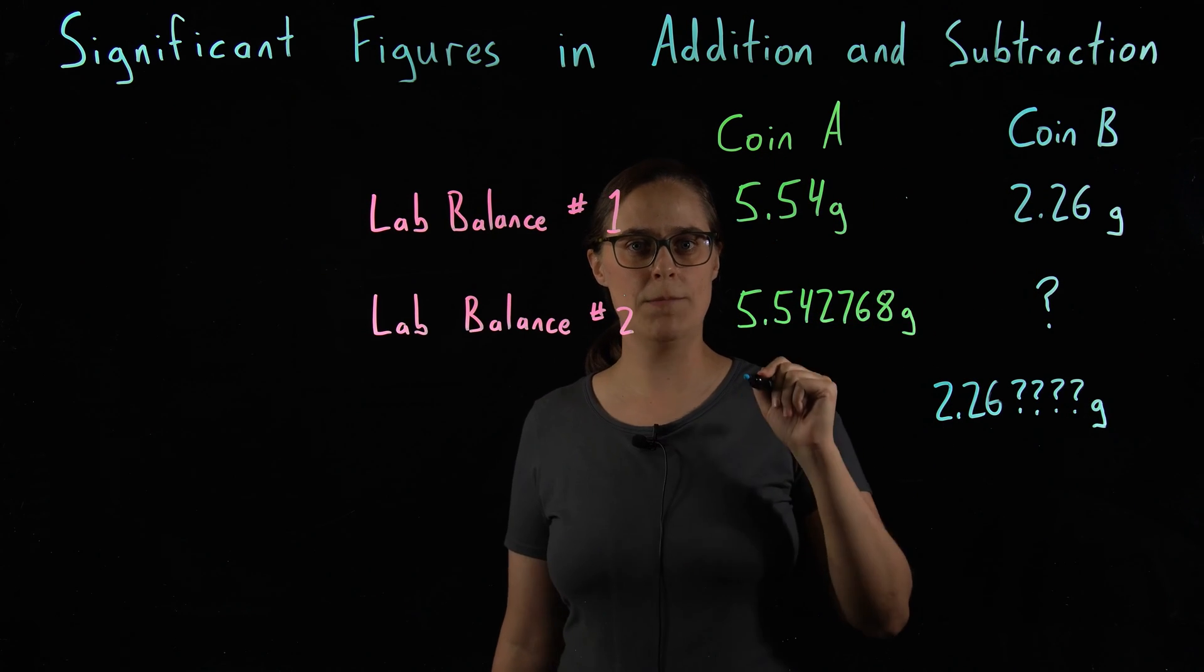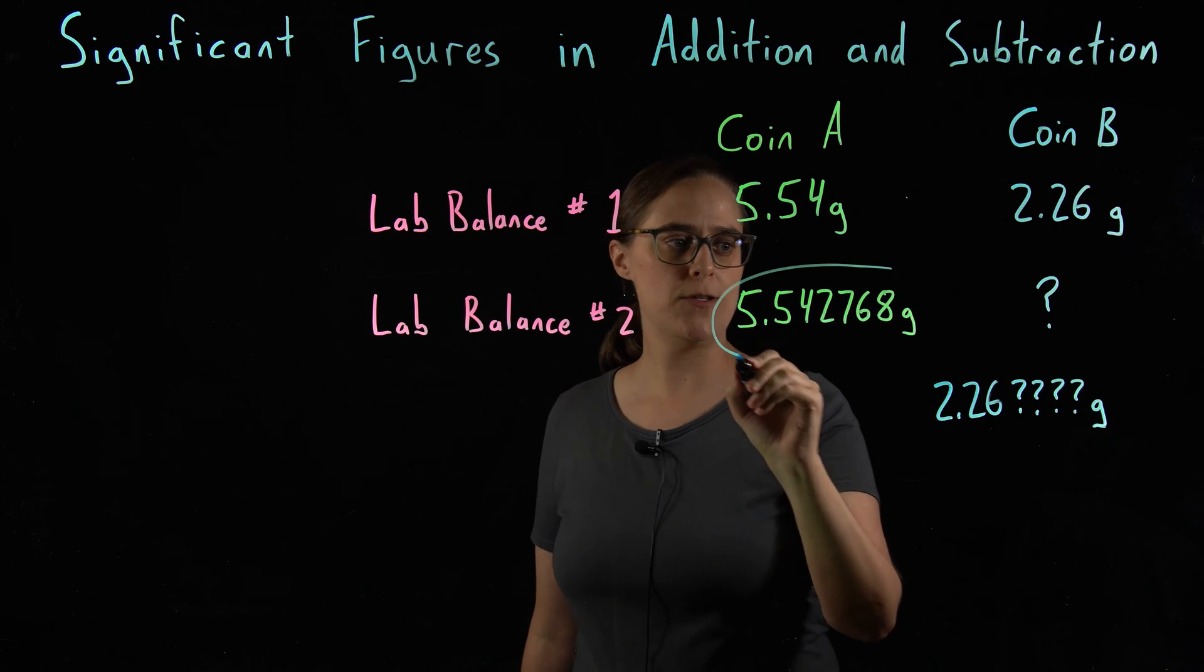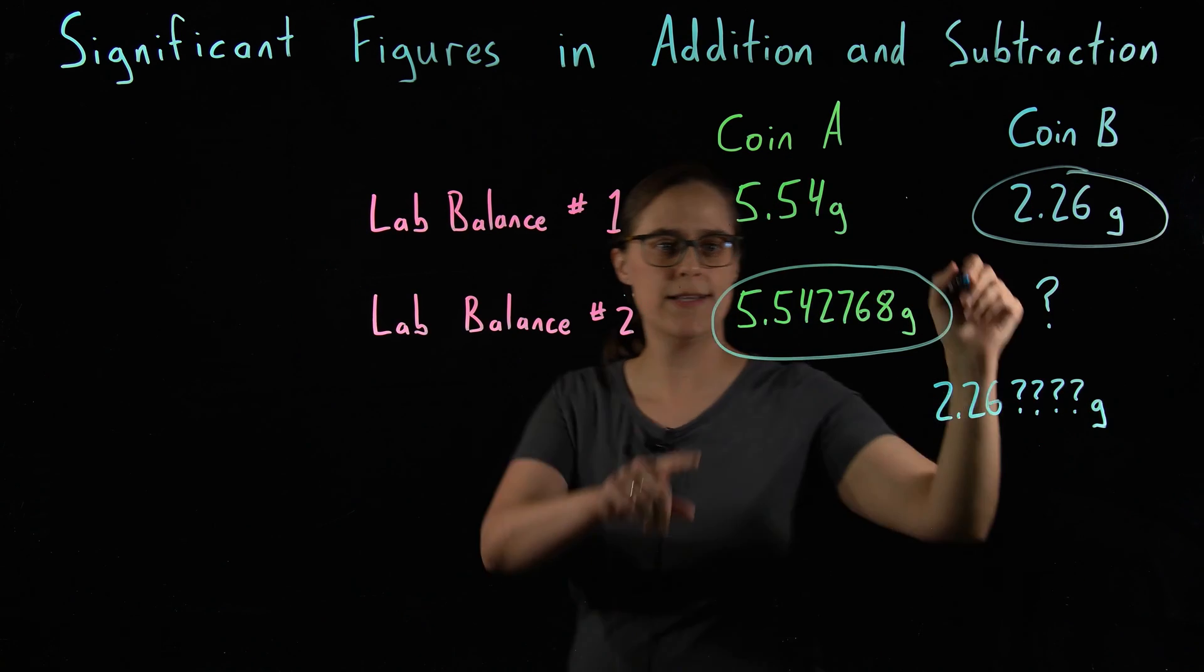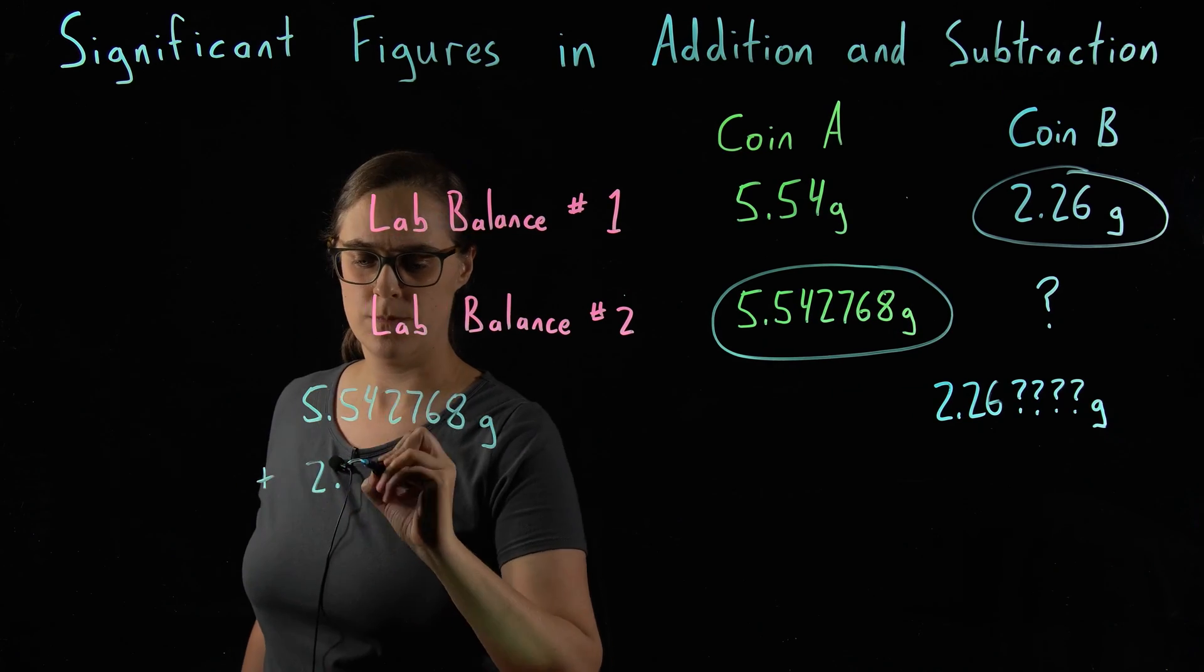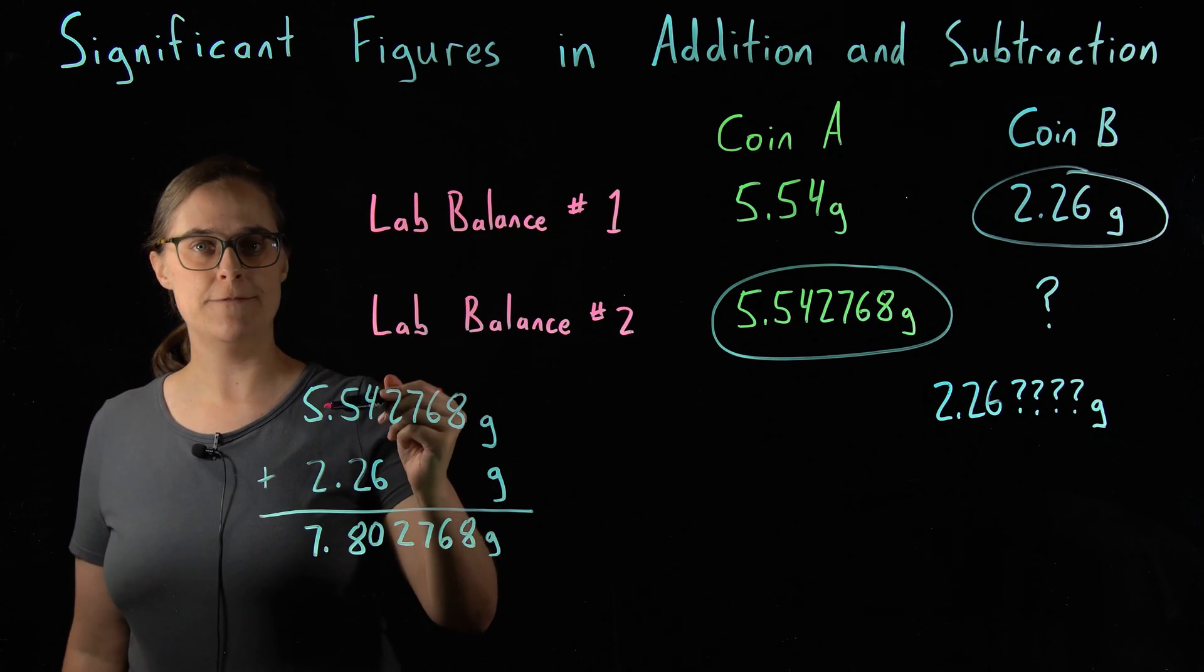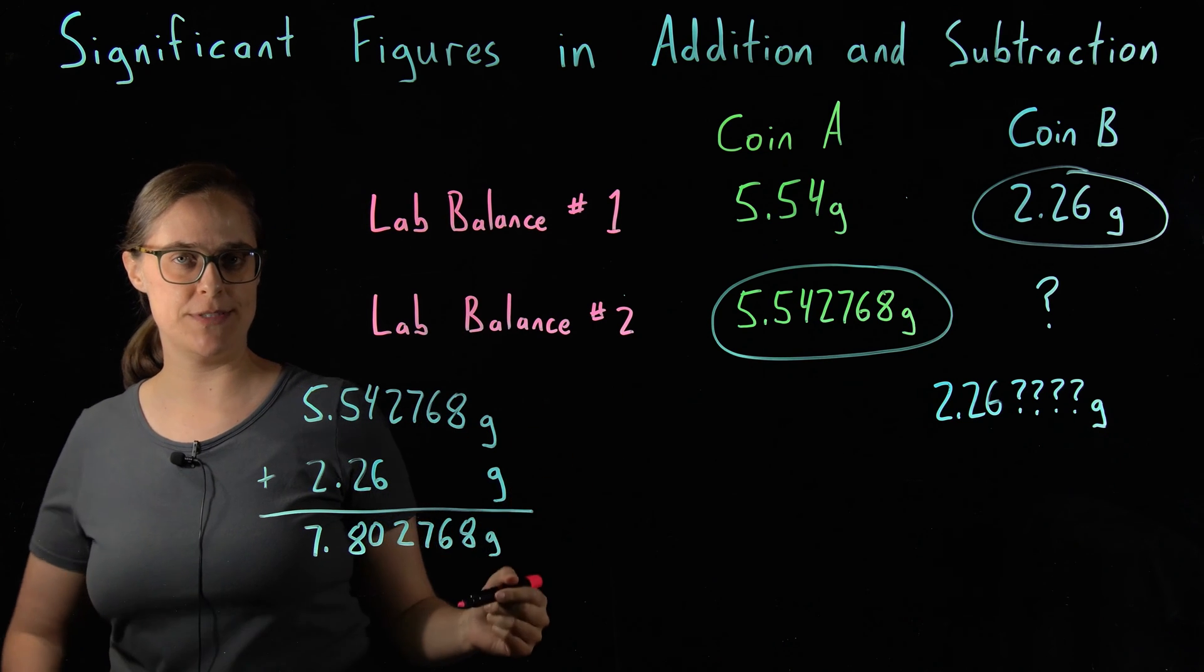But let's find the sum of the mass of these two coins. I'm going to use our more precise number in both cases. Let's add these two numbers together. So 5.542768 grams plus 2.26 grams.